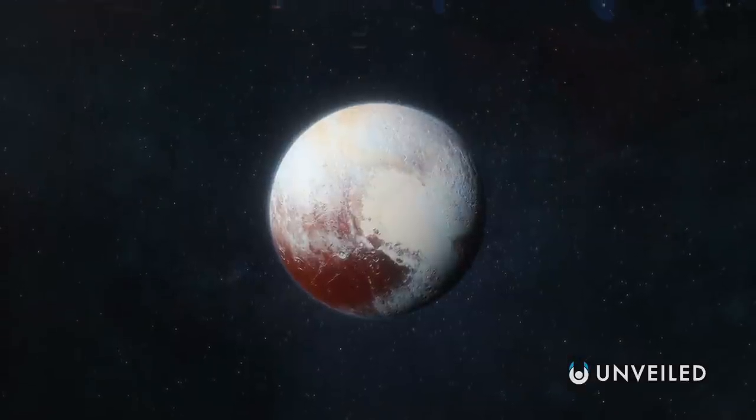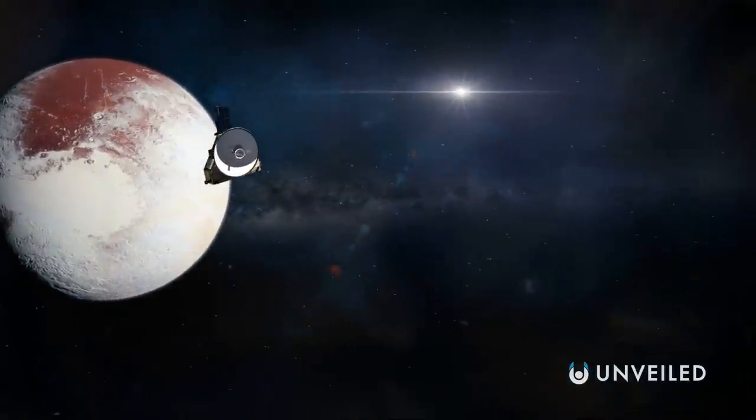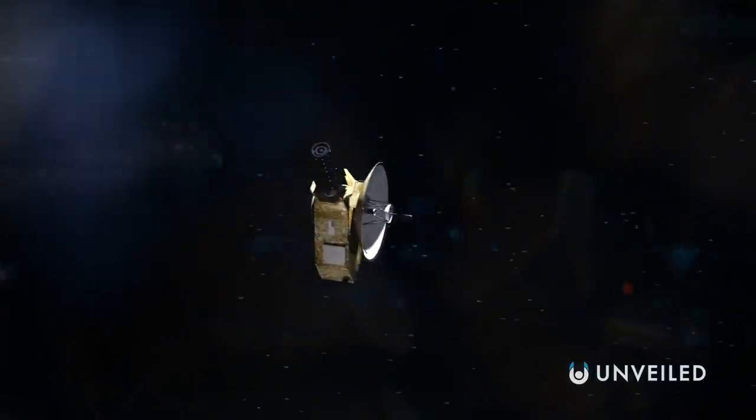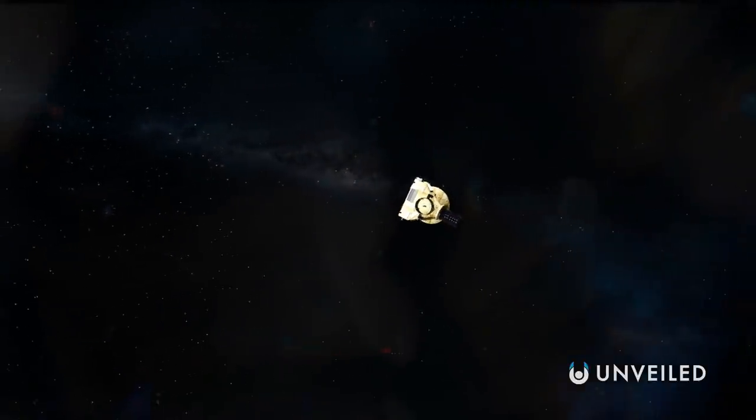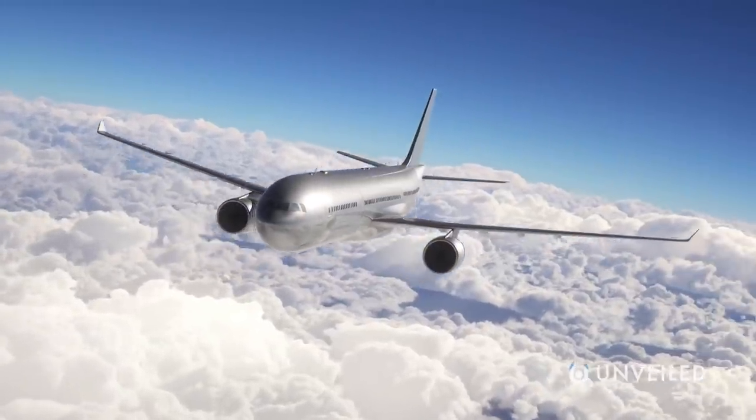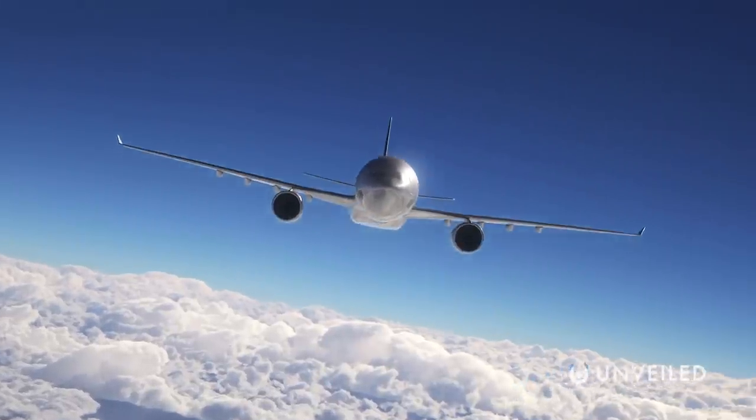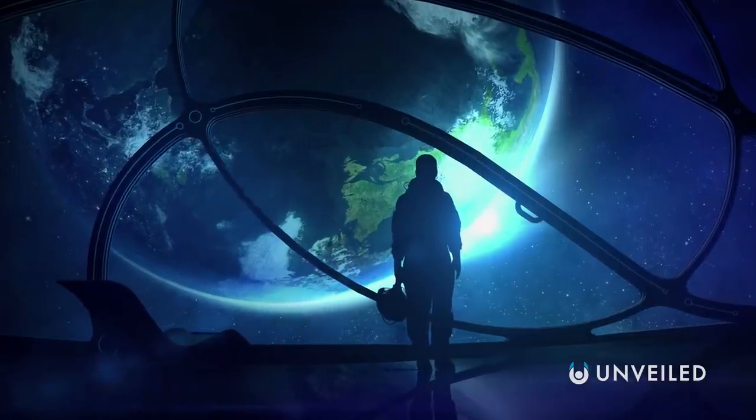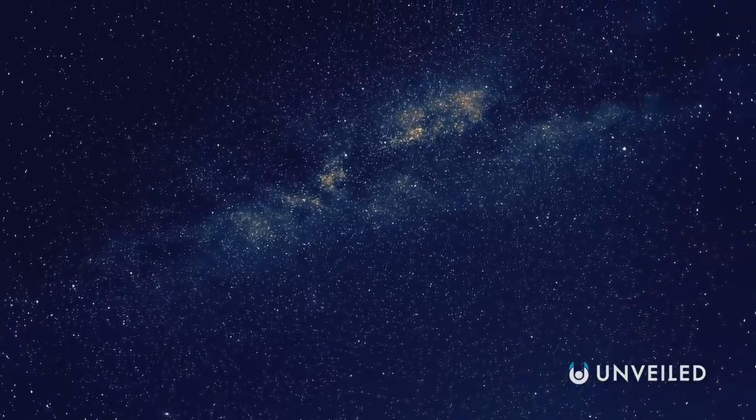Or even at Pluto, the one-time planet now dwarf planet that's even further out from the Sun. Get to Pluto, and depending on where it is in its orbit, you may have traveled an eye-watering 4.6 billion miles from home, which is roughly equivalent to getting in a plane and traveling around the world 183,000 times, but you'd still be nowhere near the solar system's edge. You would, however, be moving into mostly uncharted territory.